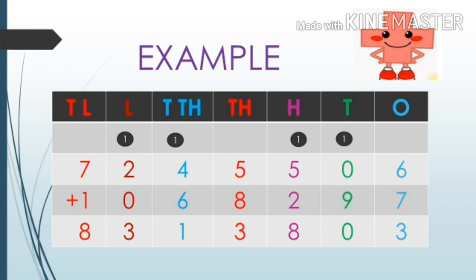Addition ones place se shuru hoga. Yaani hum pehle ones place ke digit ko add karenge, phir tens place ke, uske baad hundreds place ke digit ko add karenge. Is tarike se hum right se, yaani ones se 10 lakh ki taraf, yaani left ki taraf addition ko continue karenge.